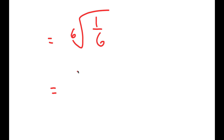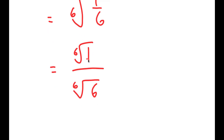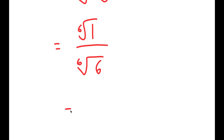Now, this is the same thing as the 6th root of 1 over the 6th root of 6. So I can basically distribute this root. The 6th root of 1 is just 1, so I get 1 over the 6th root of 6.